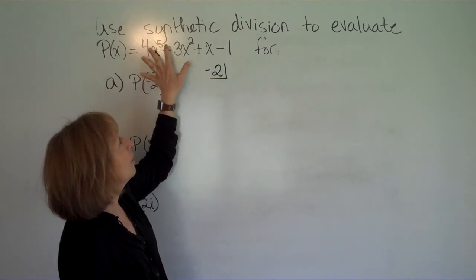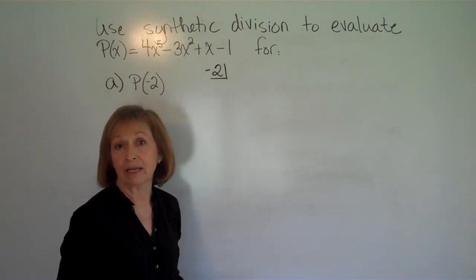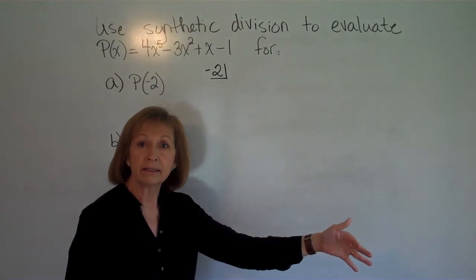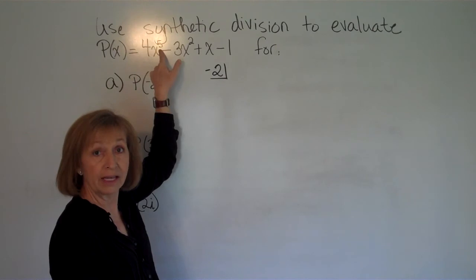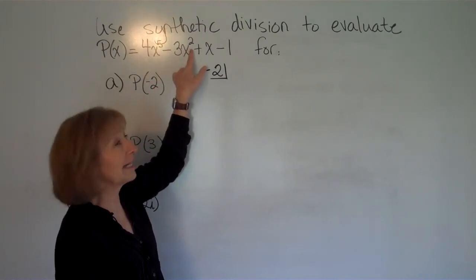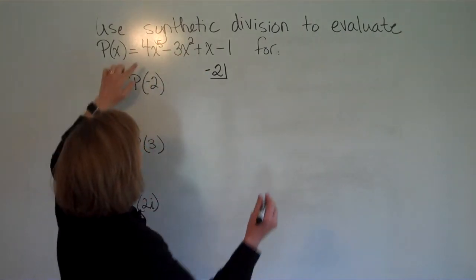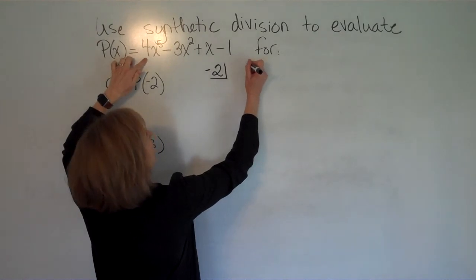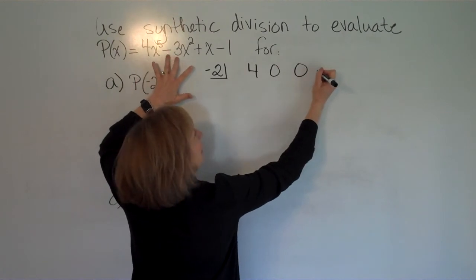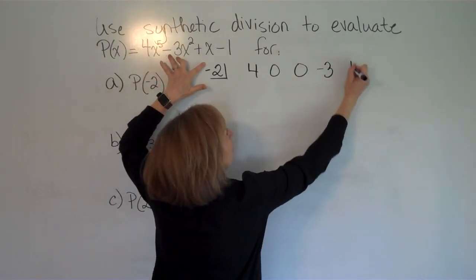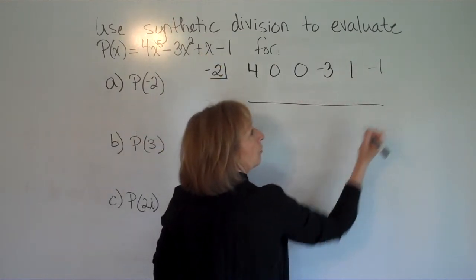Here we have the 5th power, then 2nd, 1st, and no powers in descending order. Counting down: 5, 4, 3, 2, 1, none — I have an X to the 5th, but I don't have an X to the 4th and I don't have an X to the 3rd before I get to the X to the 2nd. So I'll need 0 coefficients for those missing terms. The coefficients are: 4, then 0 for no X to the 4th, 0 for no X to the 3rd, negative 3 for X squared, plus 1 for X, and then minus 1.